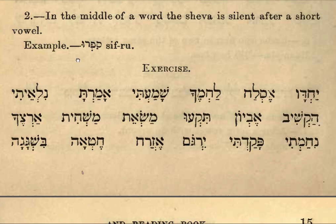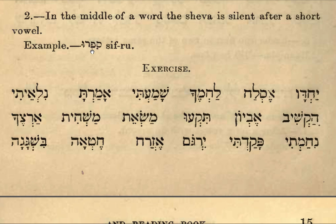More on the schwa. In the middle of a word, the schwa is silent after a short vowel, and this is why it's important to know your long vowels from your short vowels. For example, Sifru — and here the schwa is not pronounced. Sifru.